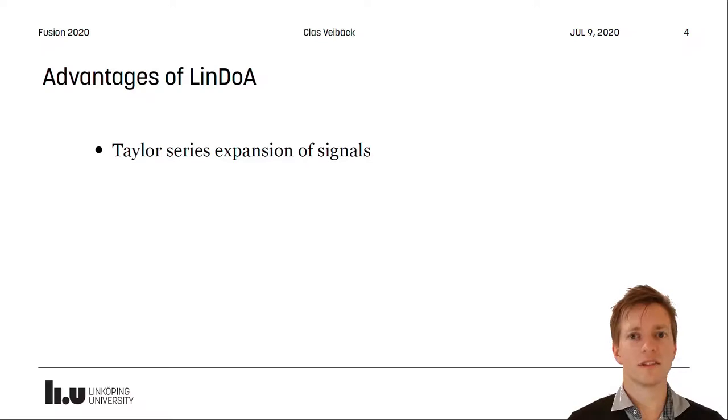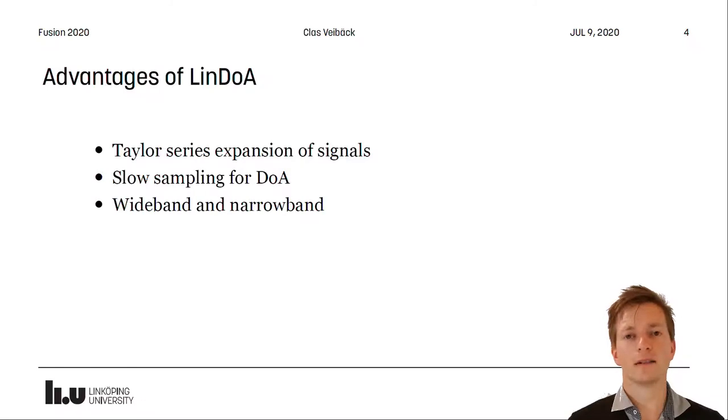The advantages of linearized direction of arrival, which is a method where we use Taylor series expansion of the sound source signals, is that we can perform slow sampling for the direction of arrival. Since we only use snapshots of the microphone array for each estimate, it works with both wideband and narrowband.